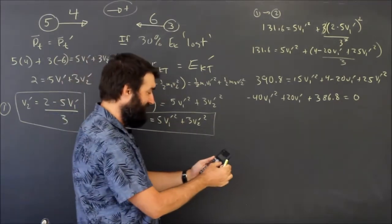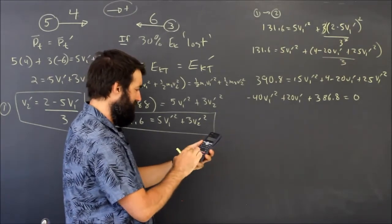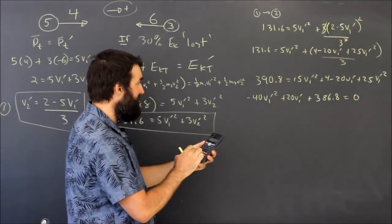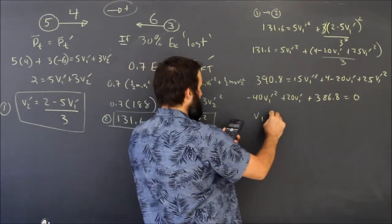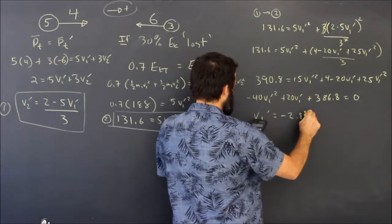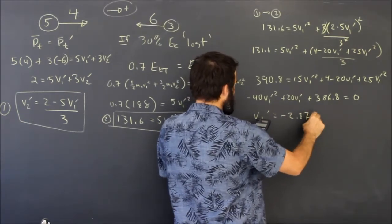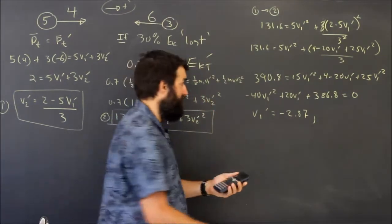Grab my calculator again. You know what, my calculator is still on from the last time. It says negative 40, good. It says positive 20, good. 560? No, it is 386.8, and I hit equals, and it solves it for me again. V1 prime is equal to negative 2.87, okay.